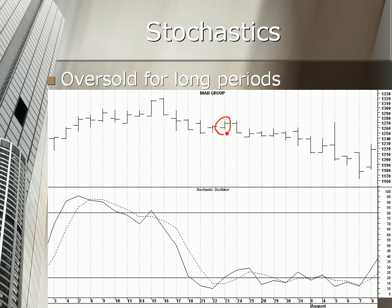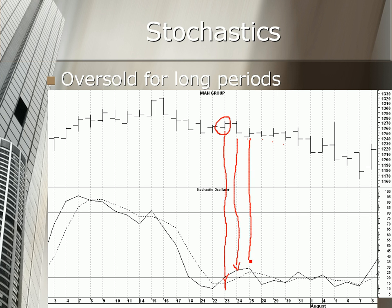Guess what happens next? The very next day the price goes down — it's as if the market knew. The day after that and the day after that, price continues lower. Yet even as price moves down, we still see the stochastic rising and think we should stay in. Then the stochastic stays up and we still think we shouldn't exit, even though price has gone down. Eventually it's not until further down that we realize: we got in and it started going down the very next day.